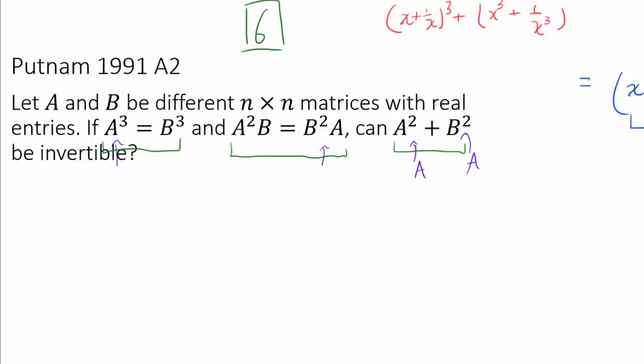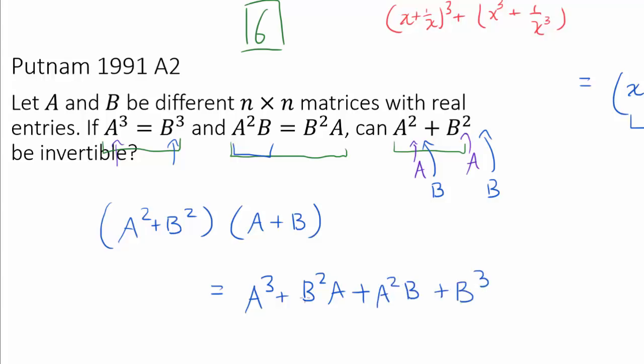And multiplying by B to the right of B squared gets B cubed. And once we see that, it's pretty obvious that A squared plus B squared times A plus B is going to get A cubed plus B squared A plus A squared B plus B cubed. And it seems like we have all the necessary ingredients.